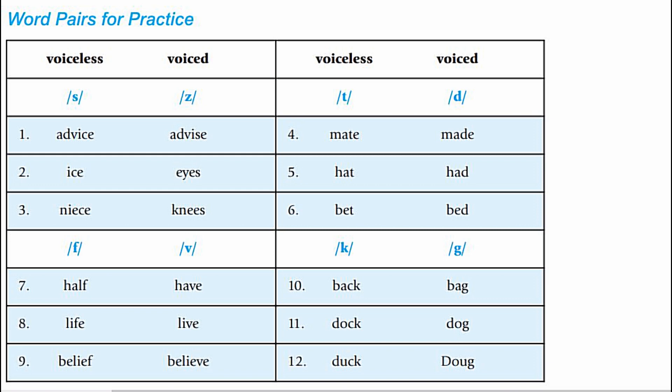F and V pairs: half, have. Life, live. Belief, believe. K and G pairs: back, bag. Dock, dog. Duck, dug.